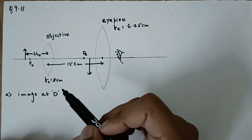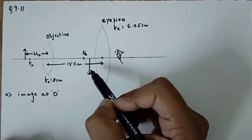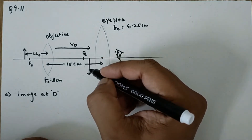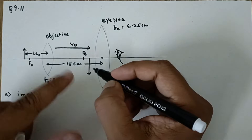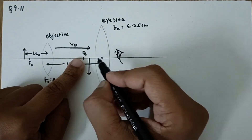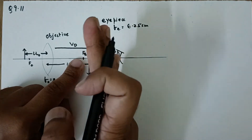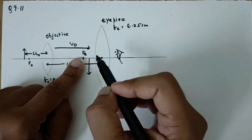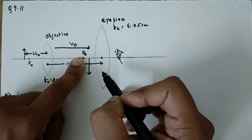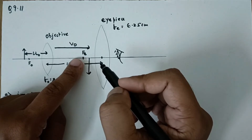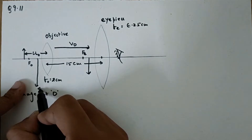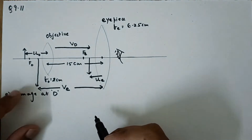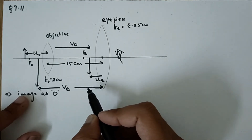First, we discuss the case in which the image is formed at D, the least distance of distinct vision. For the objective lens, this is the object and this will be the image, so this would be the image distance v_o. This image behaves as the object for the eyepiece. This object is placed between f and o of the eyepiece lens, so the image will be virtual, erect, magnified, and formed on the same side. The image distance for the eyepiece is given in the question as 25 centimeters.